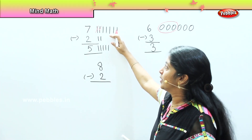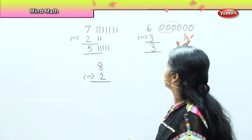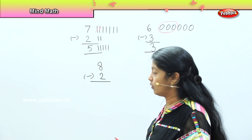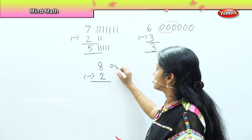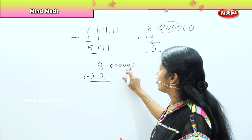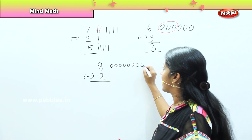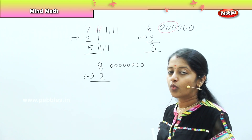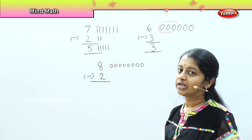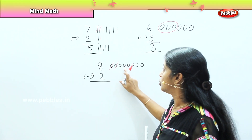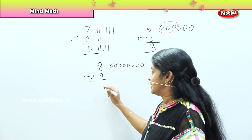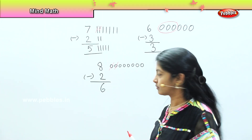We tried the striking method and the circling method, now shall we use the bead method? Tendril was eight years old so we will draw eight beads: one, two, three, four, five, six, seven, and eight. Her sister Nila is two years younger, so we strike off two. Counting what remains: one, two, three, four, five, and six. So Nila is six years old.